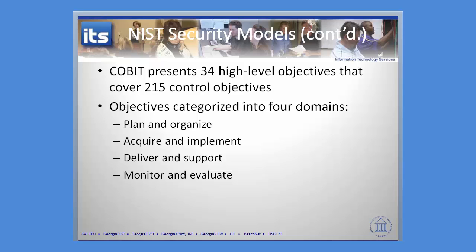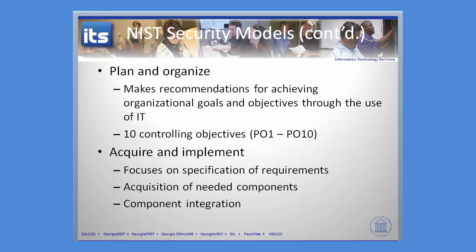These are based around four domains: Plan and Organize, Acquire and Implement, Deliver and Support, and Monitor and Evaluate. We're going to look at each one of these and give you a breakdown of where the 34 objectives are. When you look at Plan and Organize, you're going to have 10 controlling objectives. It talks about what you need to do to build organizational goals and objectives through the use of IT.